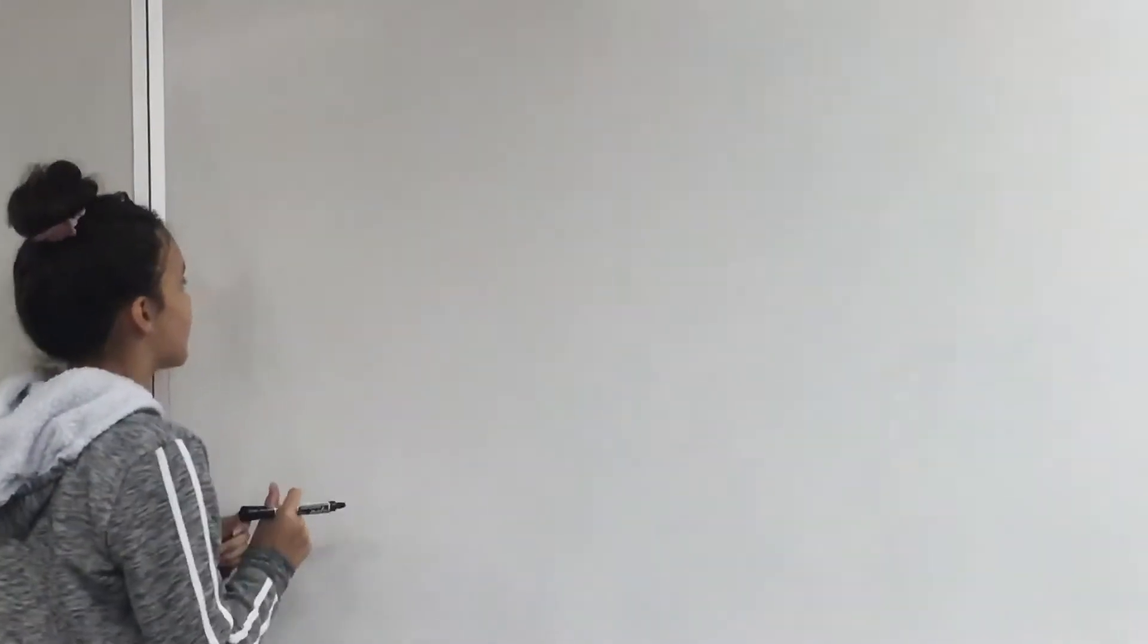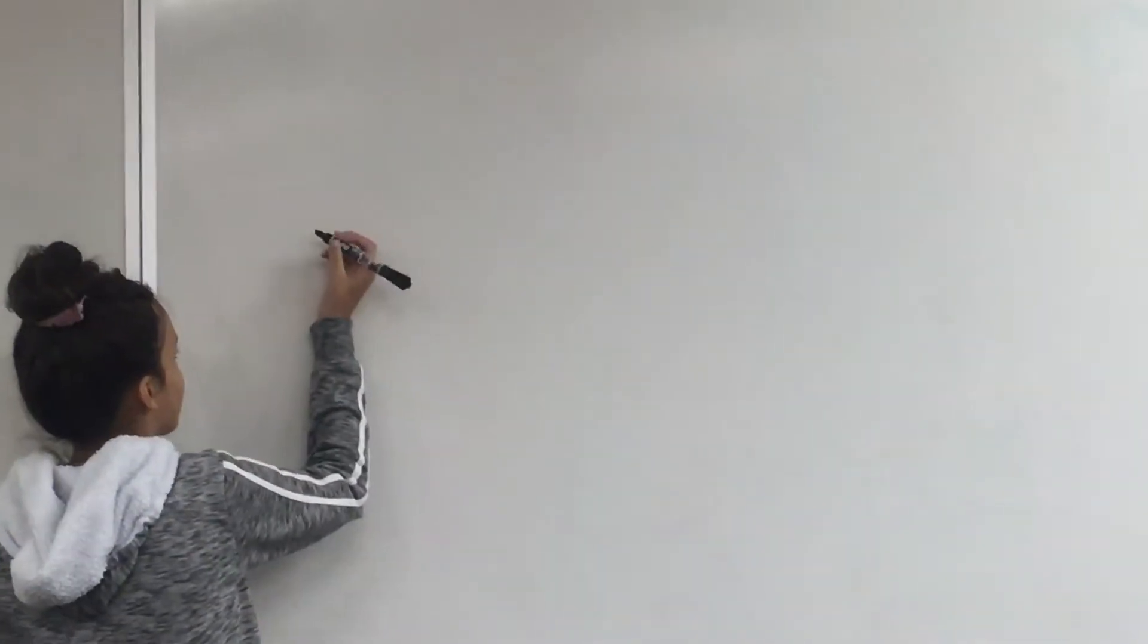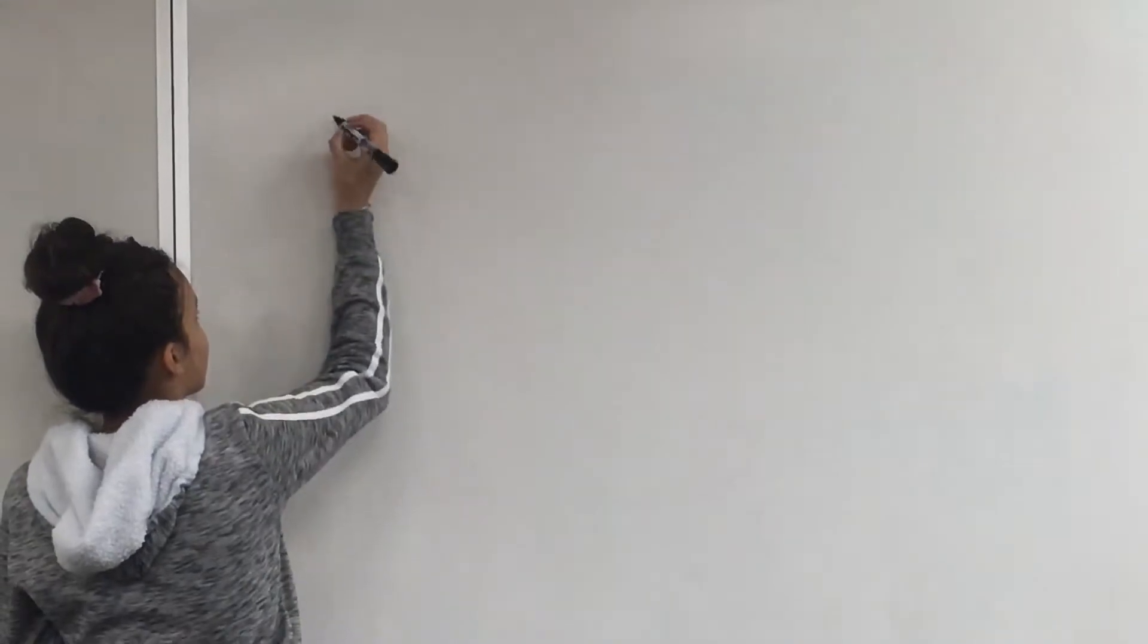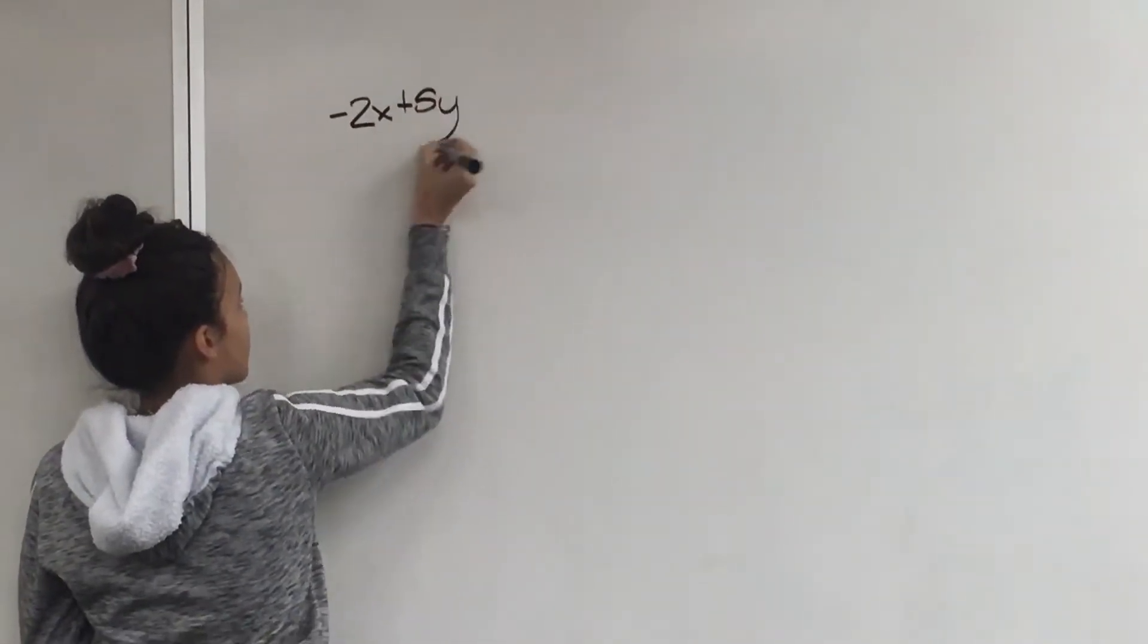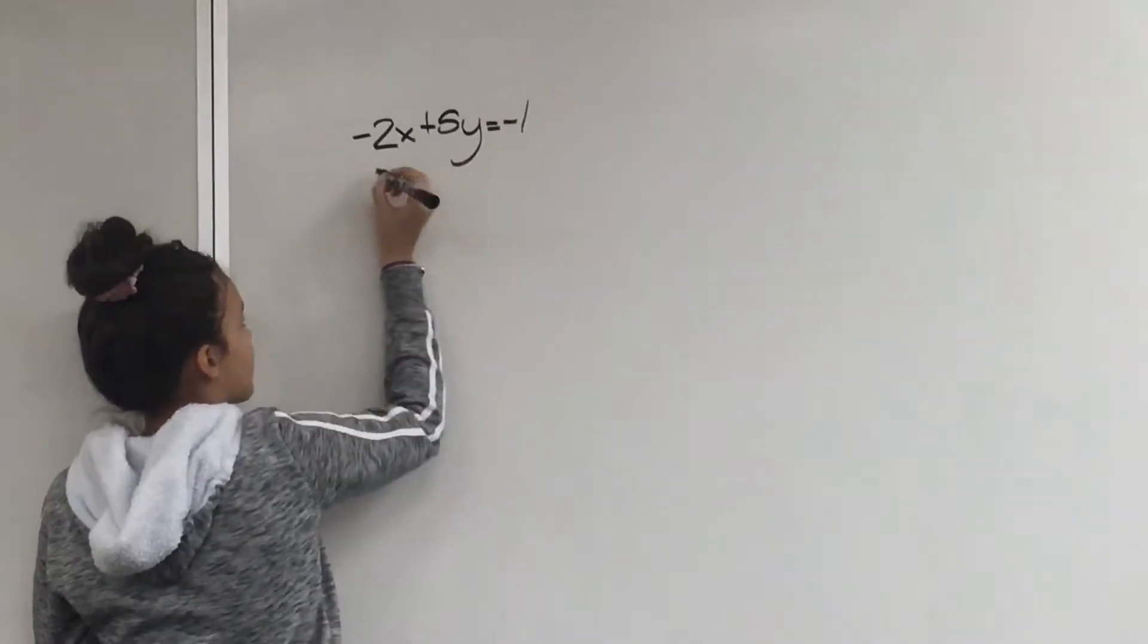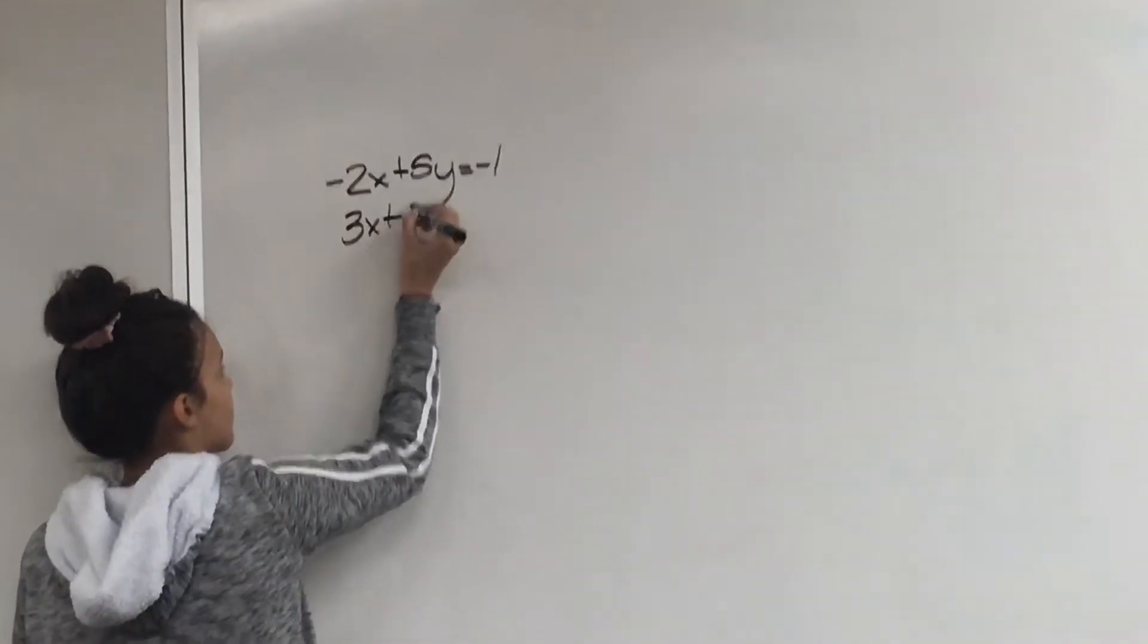Today we're going to solve the system using elimination. We're going to solve the system negative 2x plus 5y equals negative 1, and 3x plus 2y equals 11.